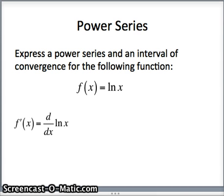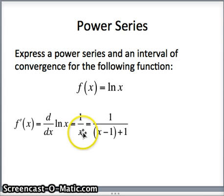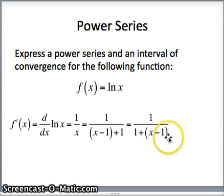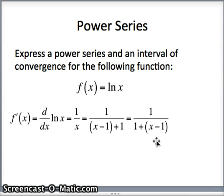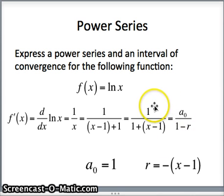We're going to do it by subtracting one and adding one. Well, 1 over x is the same as 1 over x minus 1 plus 1. Rewriting the bottom as 1 plus x minus 1 gets us closer to the form a₀ over 1 minus r. Here a₀, the initial term, will be 1, and the common ratio r will be the negative of x minus 1, since 1 minus the negative of x minus 1 gives us 1 plus x minus 1. So using a₀ equals 1 and r equals negative x minus 1, we can now construct a power series representation for f prime.